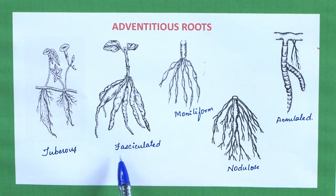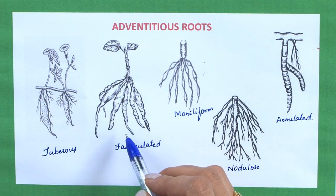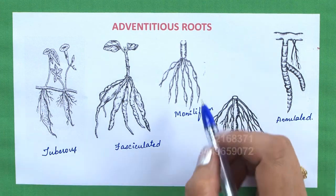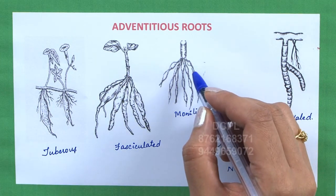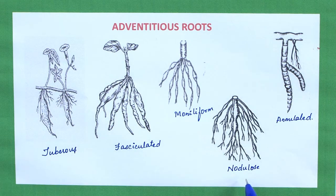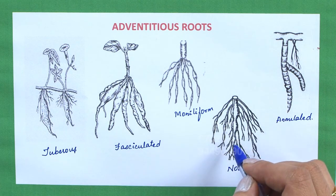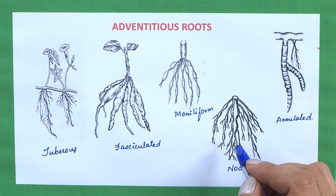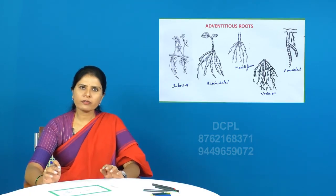Fasciculated roots of Dahlia, wherein a cluster of adventitious roots gets swollen for the purpose of storage. Moniliform roots of Bryophyllum or Portulaca, wherein the adventitious roots appear in a beaded format and store food materials. Nodulose roots of Curcuma longa, wherein the base of the root shows swellings to store food material. Annulated roots of Psychotria, wherein the adventitious roots are modified in a ring-like formation.